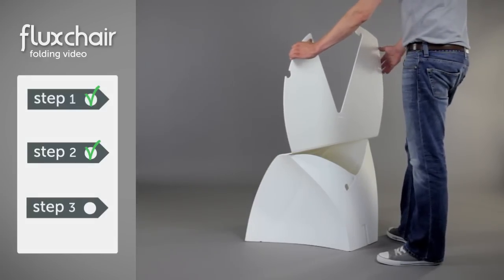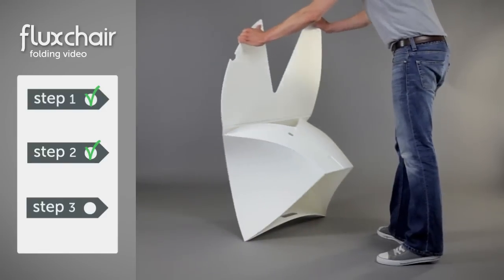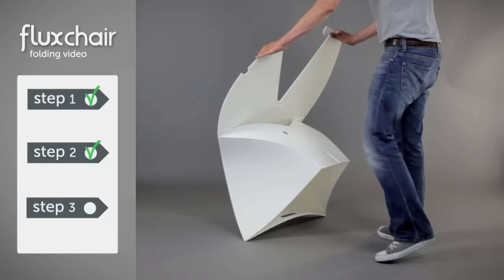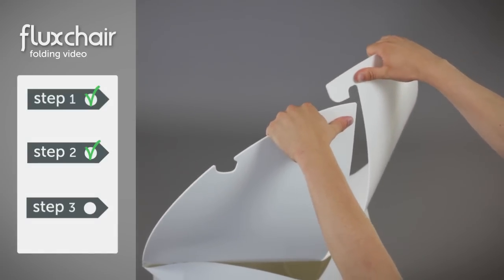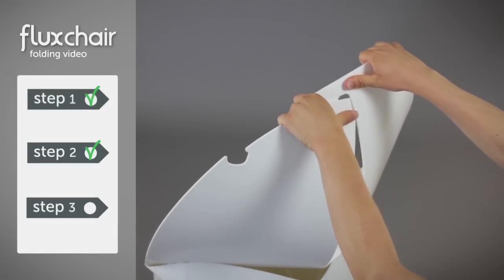Now pay attention to where Tom places his hands and tilt the chair forwards. Now here comes the tricky part. Use your thumbs to control the panels and slide the left part through the hook from the back to the front.